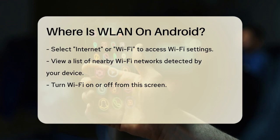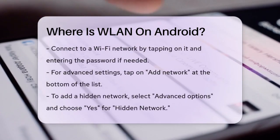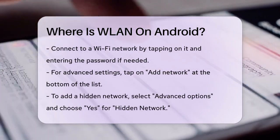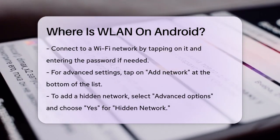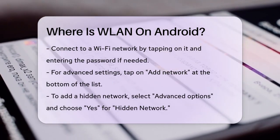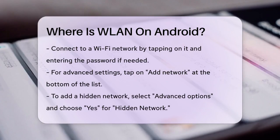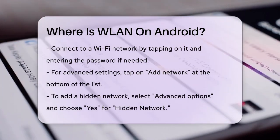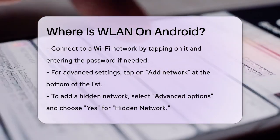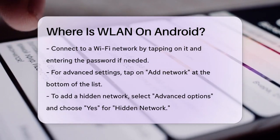For more advanced settings, such as adding a hidden network or changing the settings of a saved network, you can tap on the Add Network option at the bottom of the list. If the network you're looking for is hidden, you'll need to select Advanced Options and then choose Yes under Hidden Network.